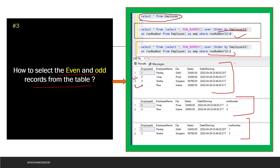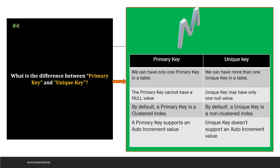The fourth question is: what is the difference between a primary key and a unique key? A table can have only one primary key but more than one unique key. A primary key cannot have a NULL value, but a unique key can. By default, a primary key creates a clustered index, and by default a unique key creates a non-clustered index.